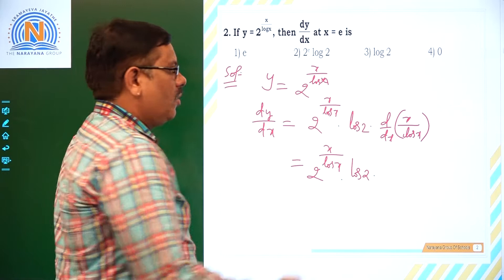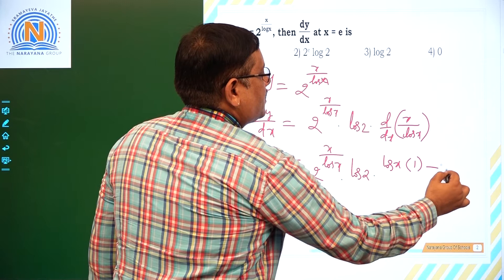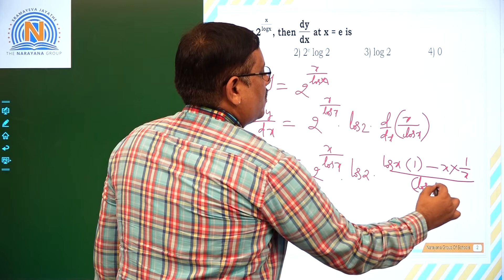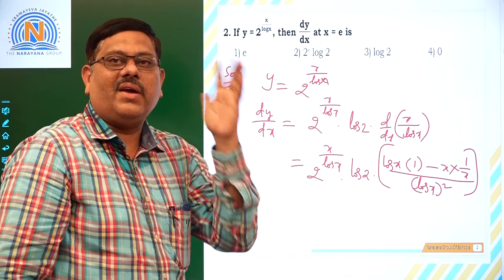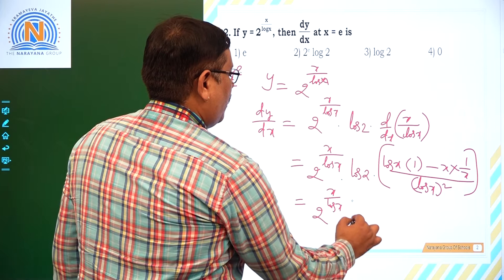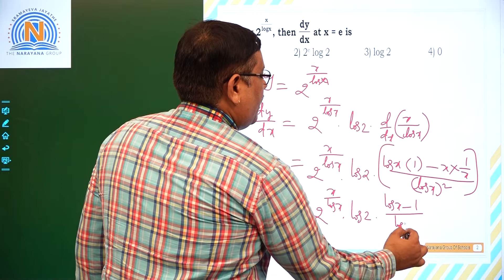Applying the quotient rule: (log x · d/dx(x) − x · d/dx(log x)) / (log x)², which gives (log x · 1 − x · (1/x)) / (log x)². That simplifies to (log x − 1) / (log x)². So dy/dx = 2^(x / log x) · log 2 · (log x − 1) / (log x)².